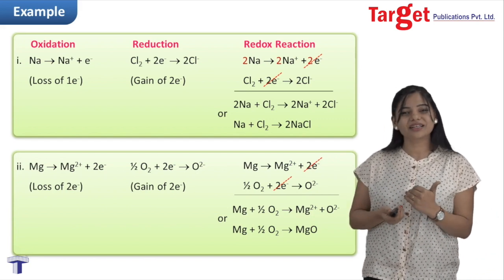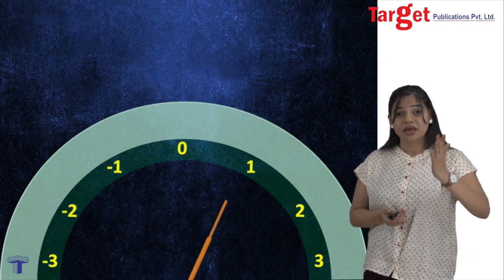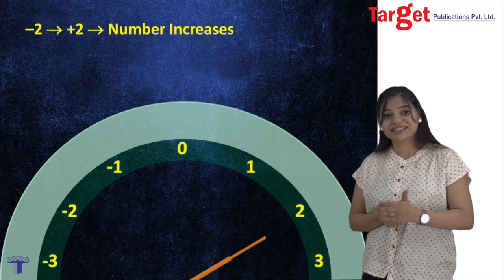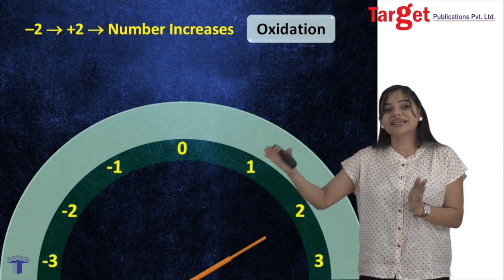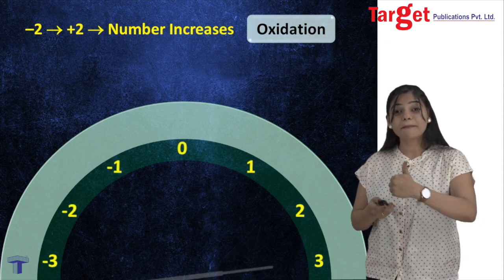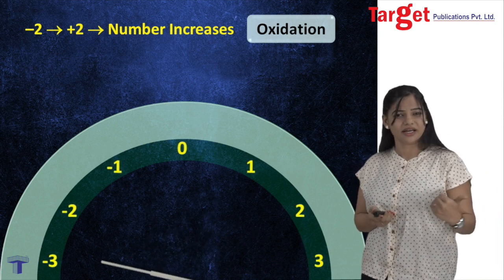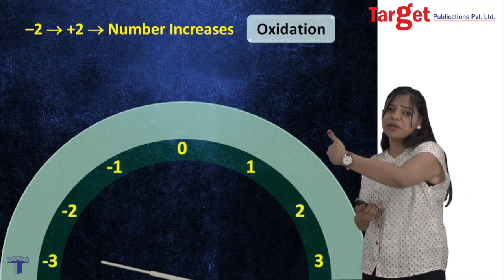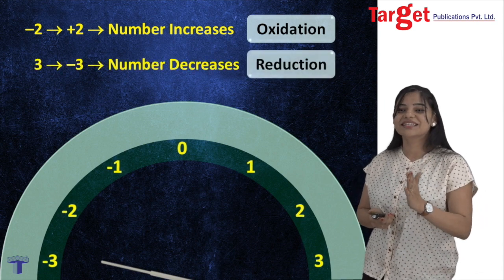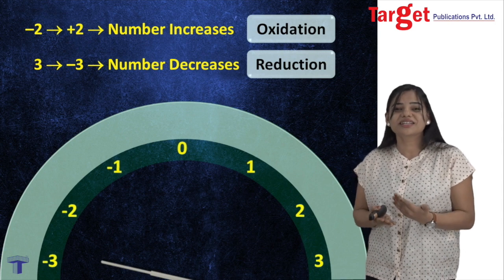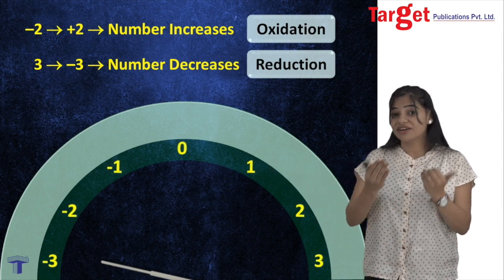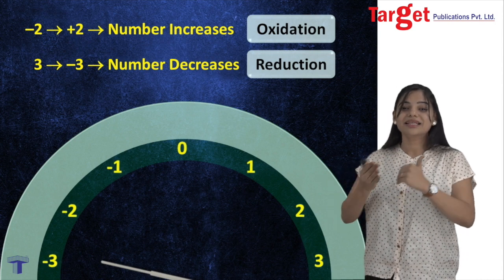So let's remember directly: when an element or species loses electrons, its oxidation number always increases — when the number increases we can directly say it is undergoing oxidation. Similarly, when the number decreases — whether going to 0 or towards the negative side, or even from +3 to +1 — we say it is undergoing reduction. Oxidation is loss of electrons where the number increases; reduction is gain of electrons where the number decreases.